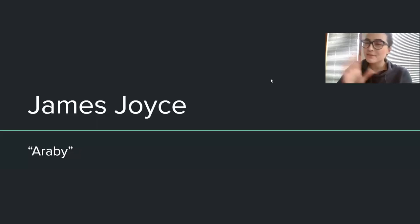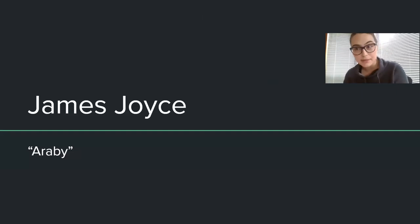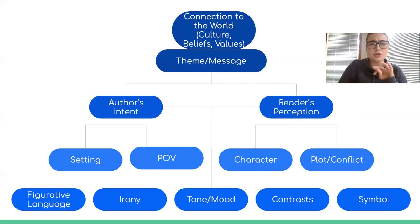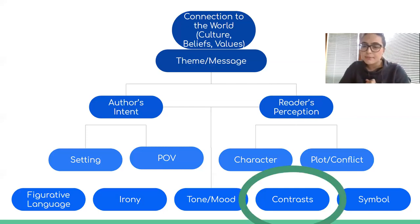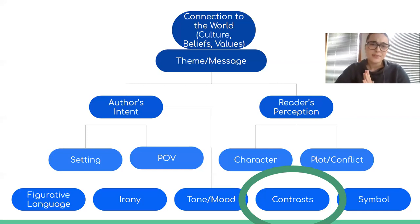Hello! Got another really short one for you today for James Joyce's short story, Araby. We've been going through the literary analysis and last time we talked really briefly about irony, and now we're going to talk really briefly about contrasts.